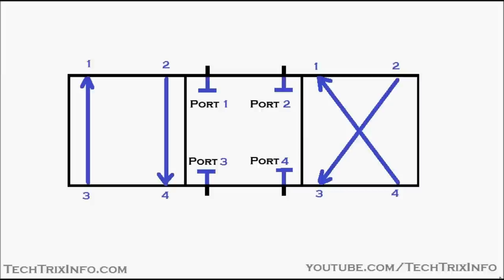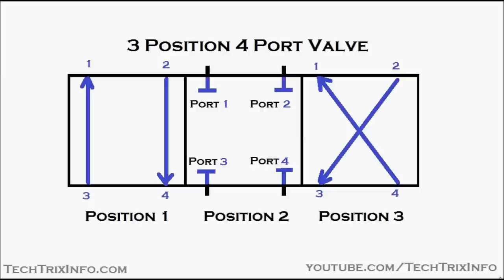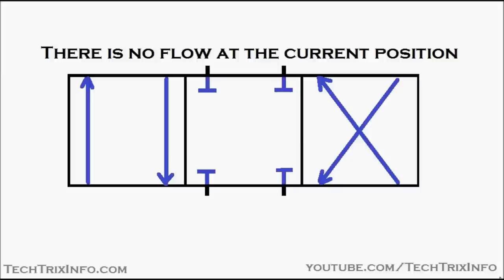The arrow marks show the direction of flow in position one, position two, and position three. It is a three-position four-port valve, and that's how the name of the control valve is derived and how we represent it in a schematic. Now let's see how this valve operates.